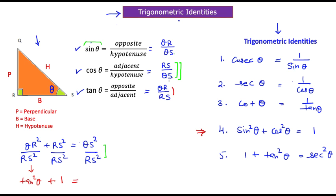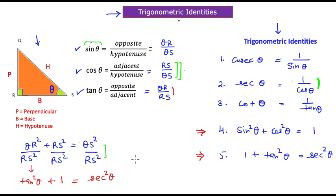The right hand side gives QS divided by RS, which is the inverse of RS/QS — that is cos theta — so its inverse is sec theta. Squaring gives sec²θ. Therefore tan²θ + 1 = sec²θ, which is exactly identity number five.